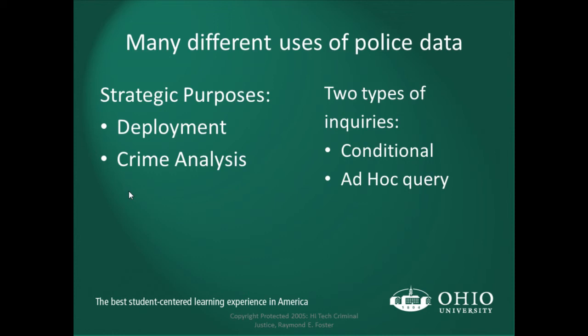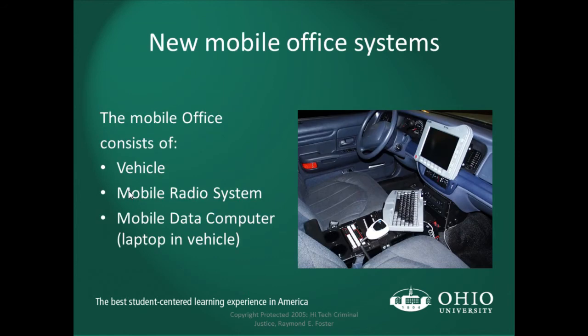There are two types of inquiries that can be used with this information. One is a conditional query and the other is an ad hoc query. A conditional query is when you want to know something within a specific set of parameters, whereas an ad hoc query is more on the fly — for example, wanting to know the number of red-hat people who walked into a store and performed a crime.